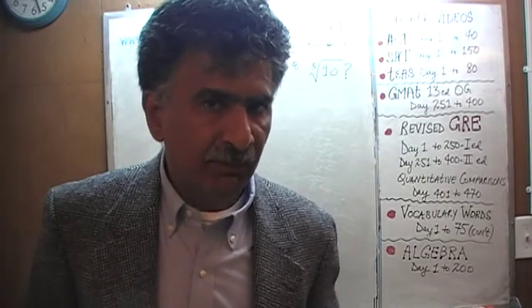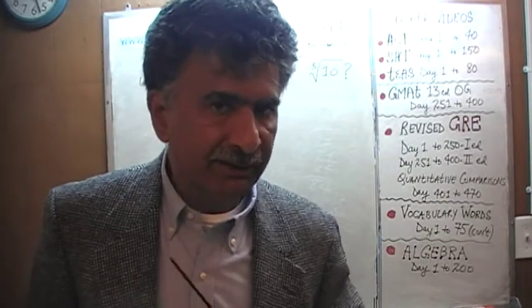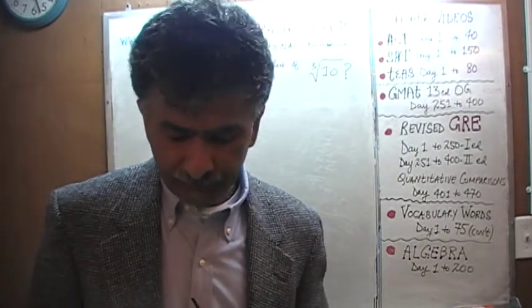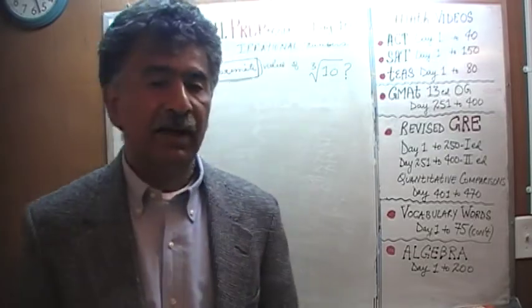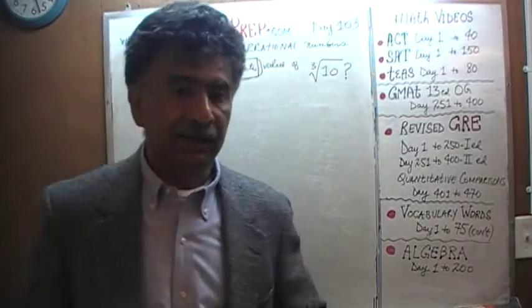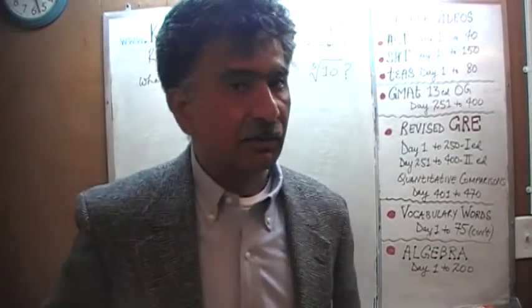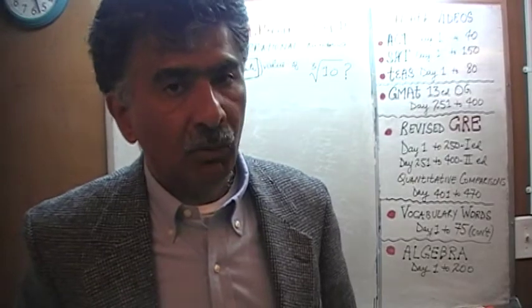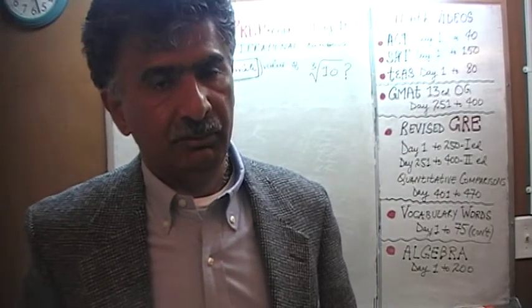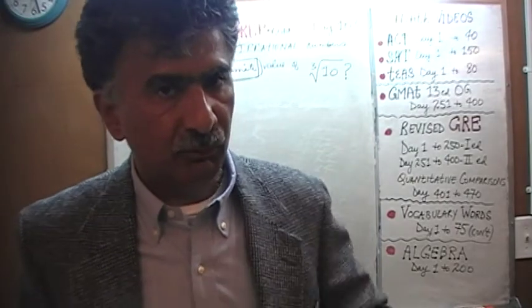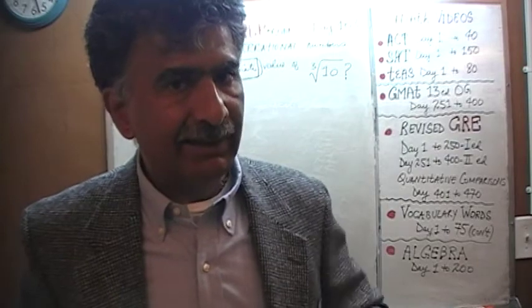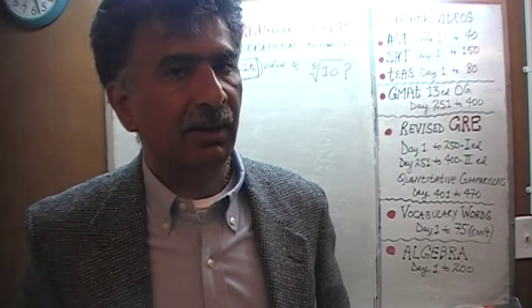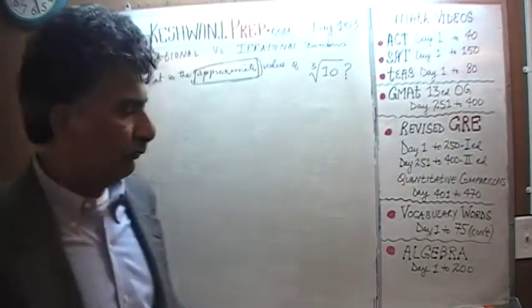What we learned day before yesterday and yesterday was that an irrational number is something that does not end — it does not have a terminating decimal, it never ends, and it has no repeating patterns. We have to have both of those conditions. Simply not ending does not make something an irrational number.